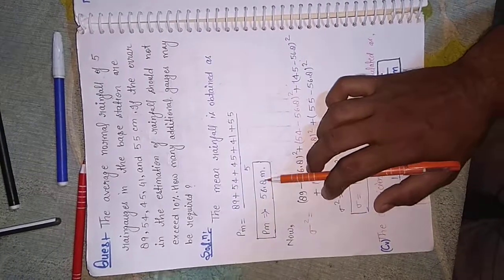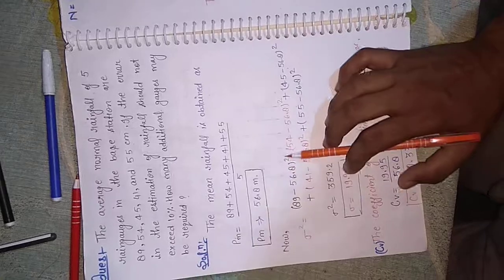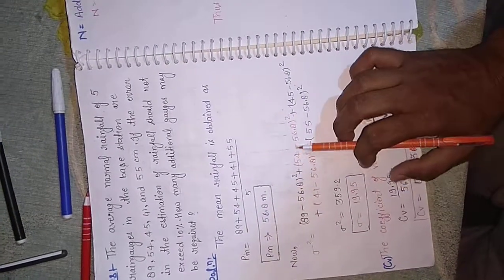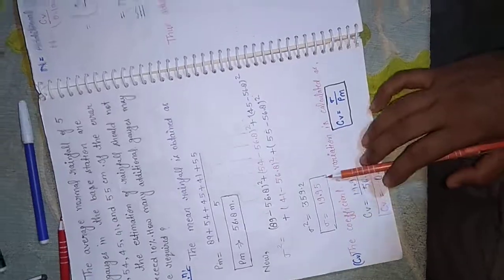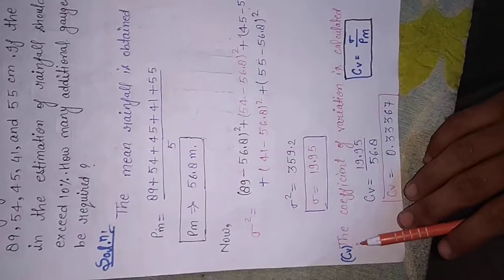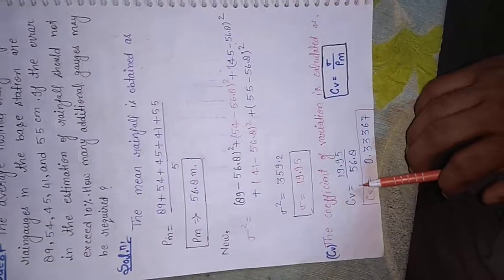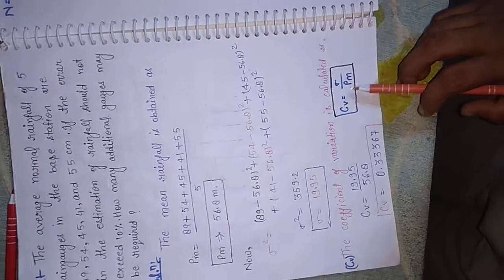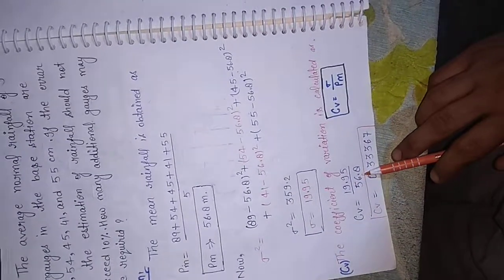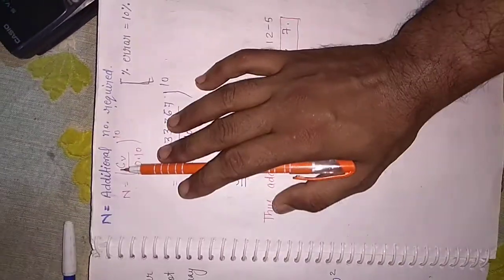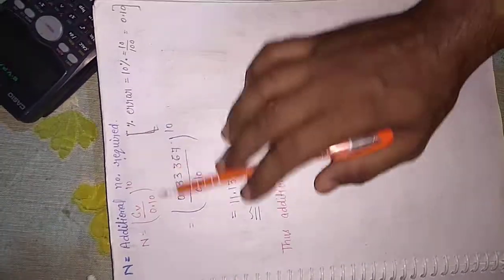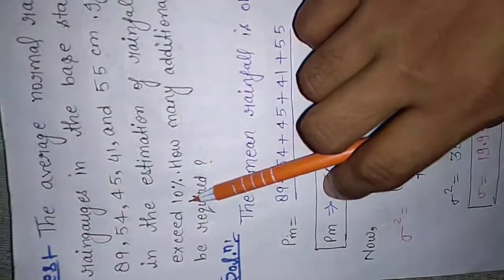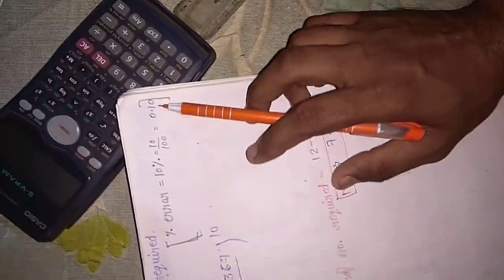We take the constraint and calculate the coefficient of variation CV, where CV equals sigma divided by Pm (the mean value). Then the number of additional gauges required N equals (CV divided by e) squared, where the allowable error e is 10%, i.e., 0.10.